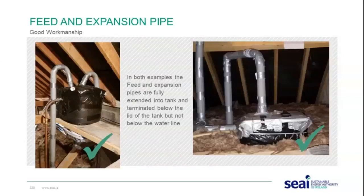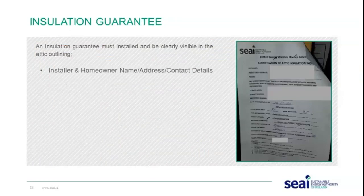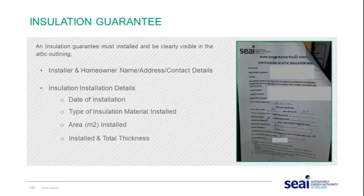Good workmanship examples show the feed and expansion pipes fully extended into the tank and terminated below the lid of the tank but not below the water line. An insulation guarantee must be clearly visible in the attic, outlining: the homeowner and installer name, address, and contact details; the installation date, type of material, area installed, and total thickness; and the signature of the installer. As a BER assessor, the first check upon entering the roof space is to see what type and depth of insulation is installed.